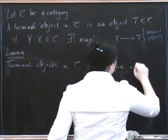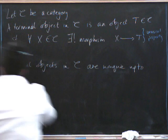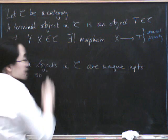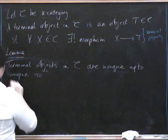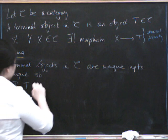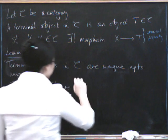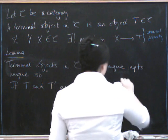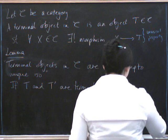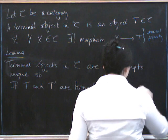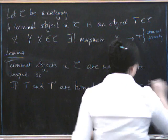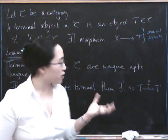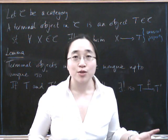Terminal objects in a given category C are unique up to unique isomorphism. So how do we say that literally, if T and T prime are terminal, then there exists a unique isomorphism T goes to T prime.